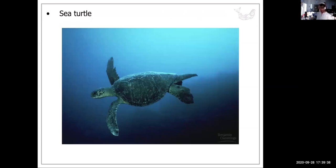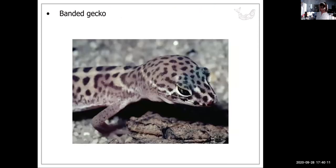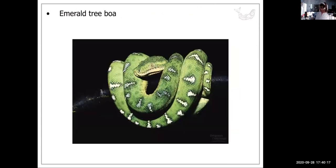So a sea turtle. They are characterized by this shell. So turtles have a bony or a cartilaginous shell. It's got a carapace and a plastron on the ventral surface. It develops from the ribs. A banded gecko. An emerald tree boa. Watch out for that one.